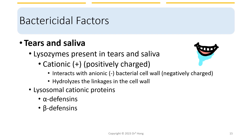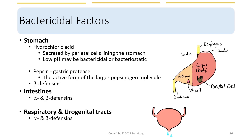In tears and saliva, we have lysozymes. These lysozymes are positively charged, or cationic, and can interact with the anionic, negatively charged bacterial cell wall. This positive-negative interaction allows them to hydrolyze the linkage in the cell wall, breaking open the protective layer of the bacteria, which then lyses in the process. In addition to lysozymes, tears and saliva also contain positively charged proteins called alpha-defensins and beta-defensins. In the stomach, we have hydrochloric acid secreted by parietal cells lining the stomach, providing a low pH that can kill or prevent pathogens from growing — that is, bactericidal or bacteriostatic effects. Not all bacteria are killed by low pH.